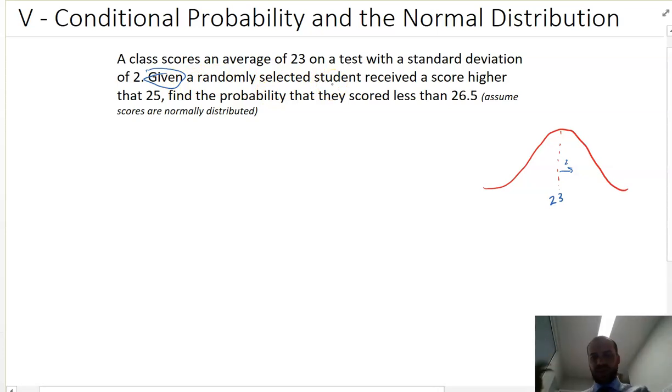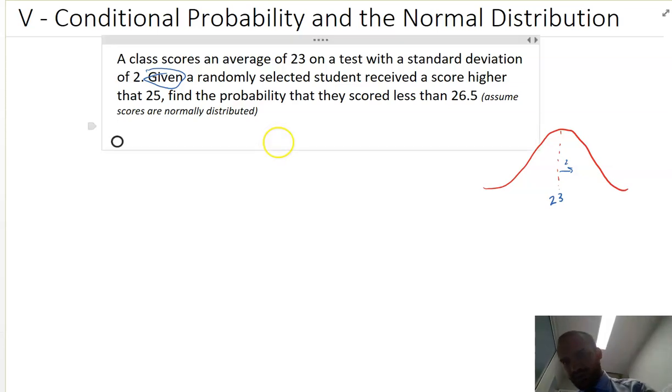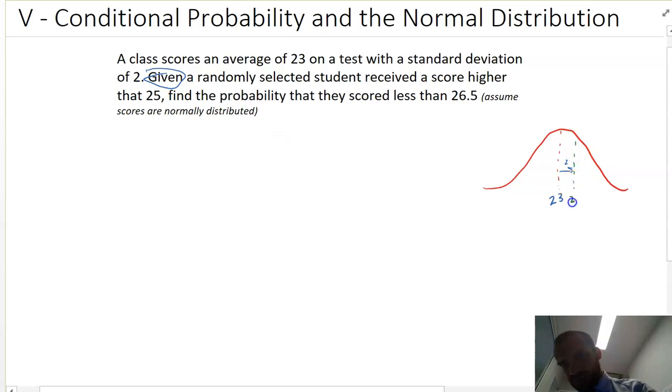So it says given a randomly selected student received a score higher than 25. So you walk into the class, there's like, I don't know, 30 kids in there. You pick one at random and you say to them, did you score more than 25? And they say, yes. Okay, let's just draw that in. More than 25. There's 25.